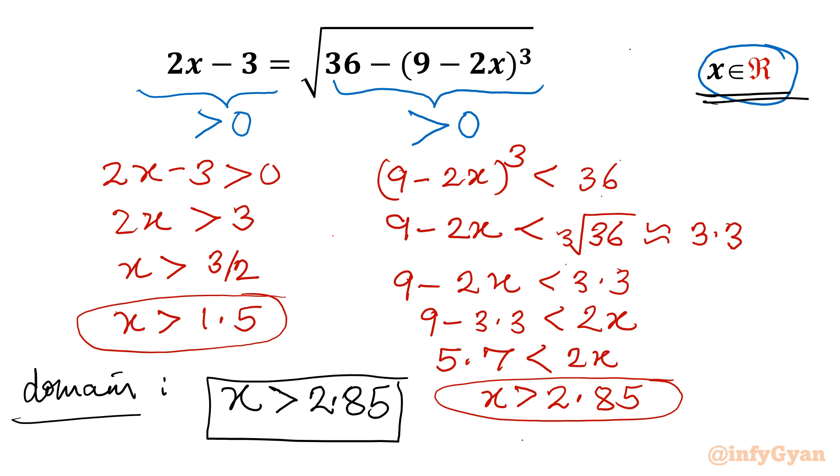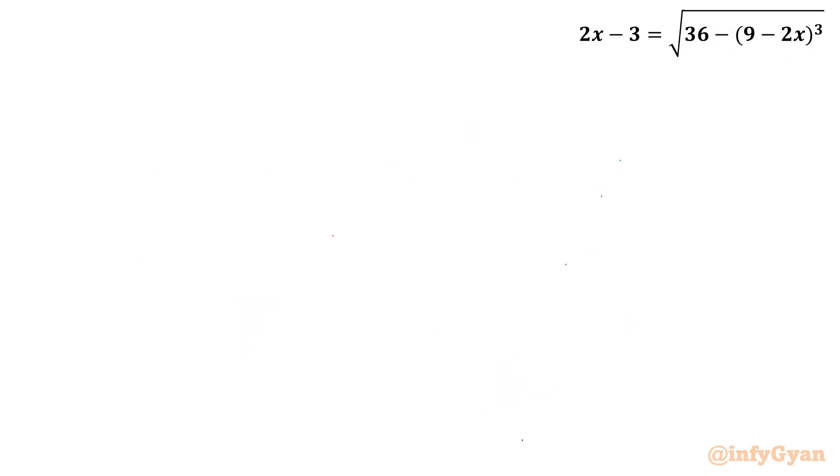Let's solve this equation. I will begin with taking square both sides straight away. So I will write 2x minus 3 whole square, equal to 36 minus 9 minus 2x whole cube. Square root and square will be over.